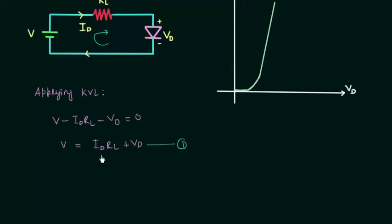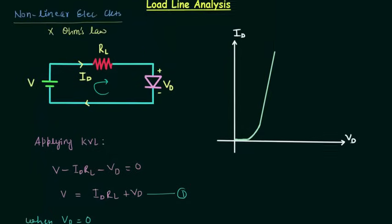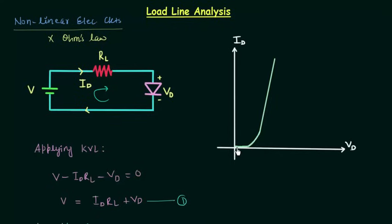I want to calculate the diode current ID when VD is equal to zero. When VD equals zero, using equation 1 we get V equals ID·RL, which gives ID equals V divided by RL. This is the value of ID when VD equals zero, and I will also show this on the VI characteristics plot.